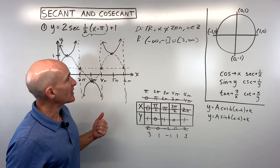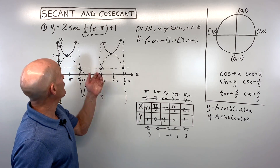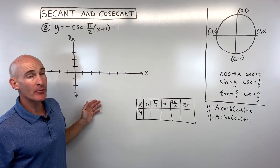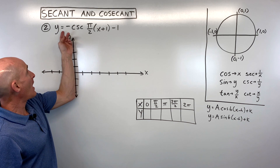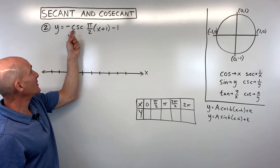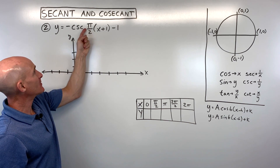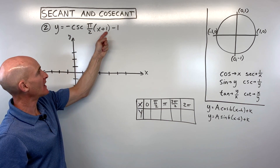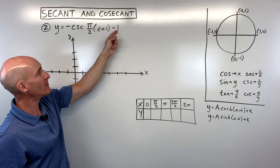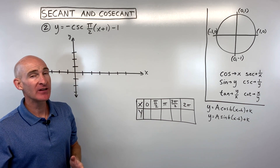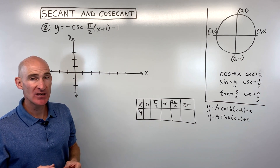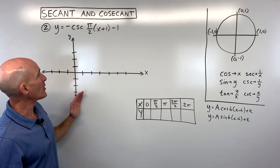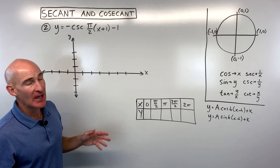Let's take a look at another example involving cosecant. For number two, we've got y = −csc(π/2 · (x + 1)) − 1. See if you can try this one on your own.